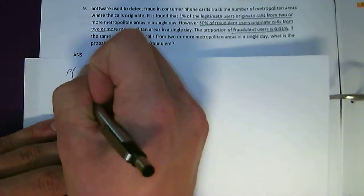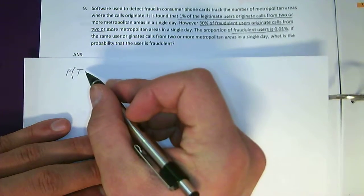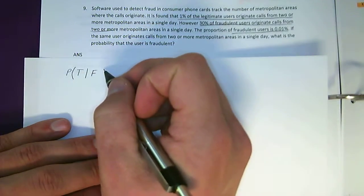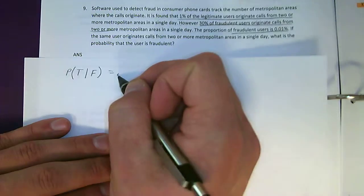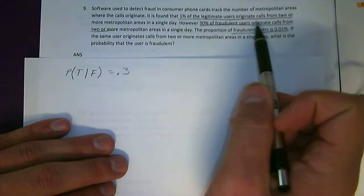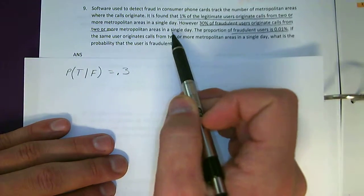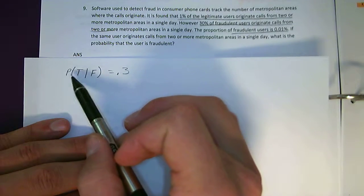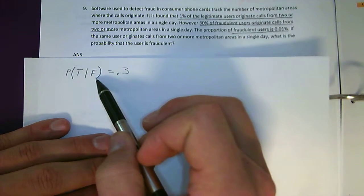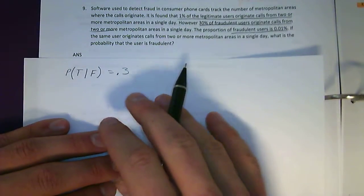So you're going to have conditional probabilities, so we'll start with the easiest one. So the probability of two plus calls, we're going to say T is two or more calls, given fraudulent is equal to 0.3, which is 30%. So 30% of fraudulent users originate calls from two or more metropolitan areas in a single day. So given two or more, 30% are fraudulent, which is equal to 0.3.